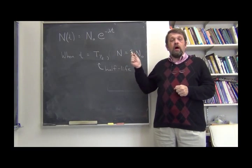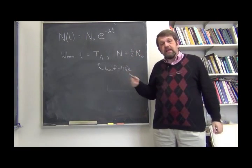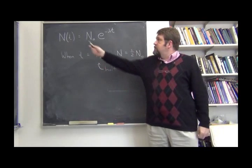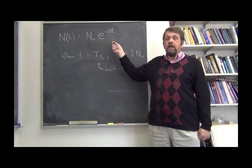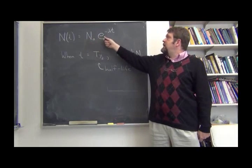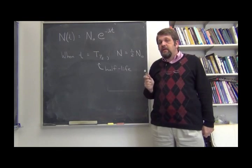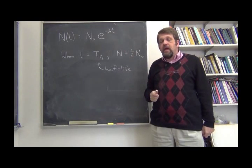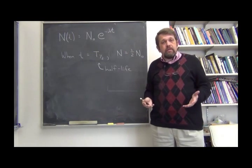The number of nuclei of an unstable element decreases exponentially over time. So the number of nuclei remaining in a sample of radioisotope decays exponentially with this formula. The number is the original number times e to the minus lambda t, where lambda is the decay constant.